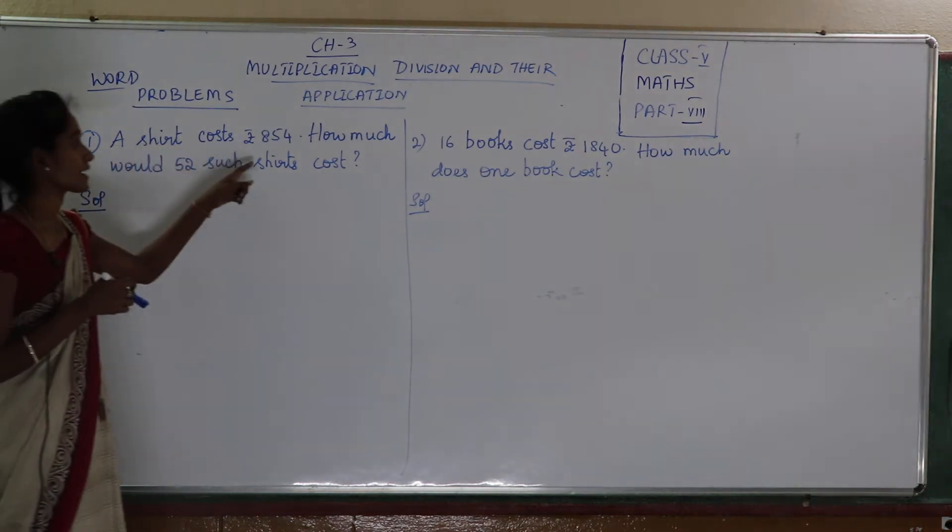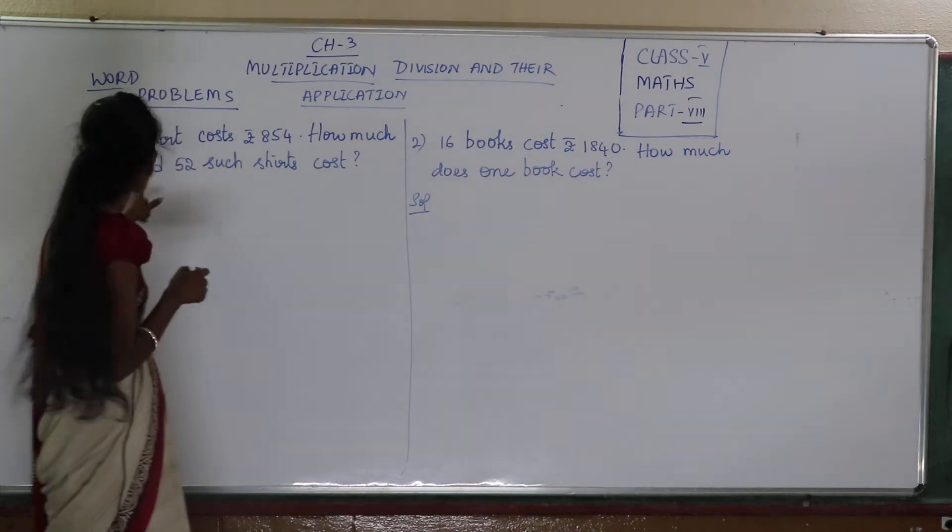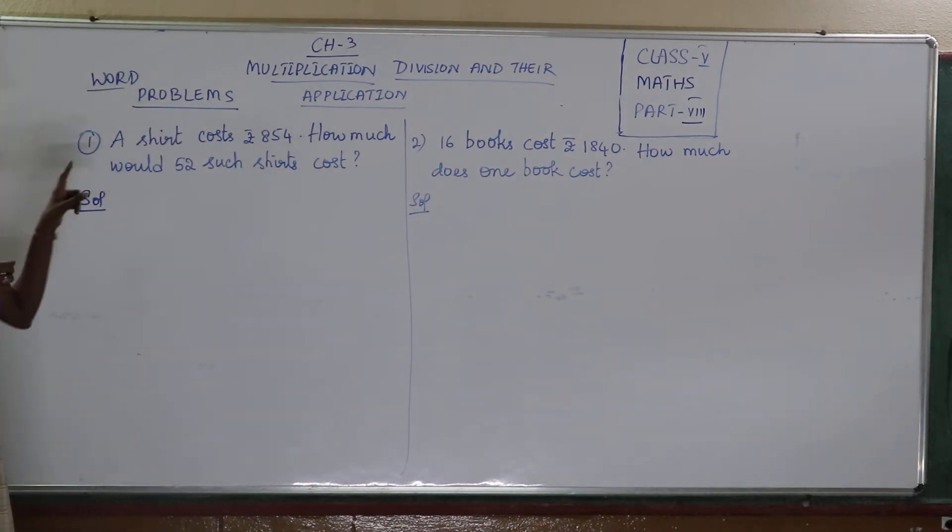A shirt costs 850 rupees. How much would 52 shirts cost? He is telling one shirt costs 850 rupees. You have to find out how much 52 shirts cost.